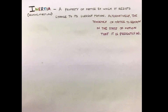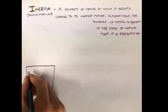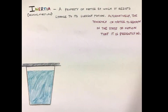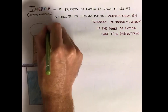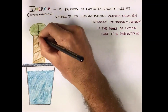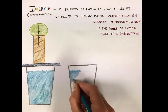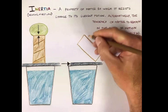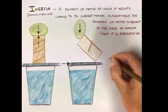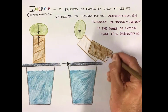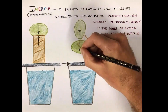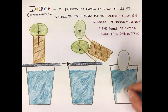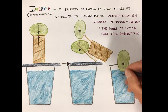Alternatively, you could think of it as a tendency of matter to remain in the state of motion that it is presently in. So if we take a look at our cup of water with our cutting board and toilet paper roll and egg, everything at the beginning is in equilibrium, meaning there is no motion going on. Now, as I quickly remove the support for the egg by striking the side of the cutting board, gravity takes over, and the egg is then dropped into the glass of water. The egg's inertia is resisting the motion sideways that the cutting board and also the cardboard tube experience.